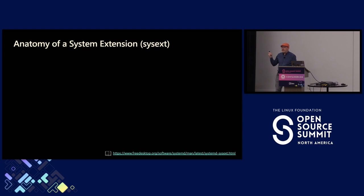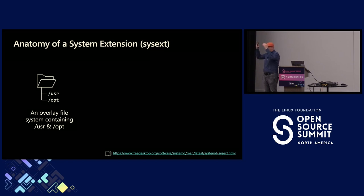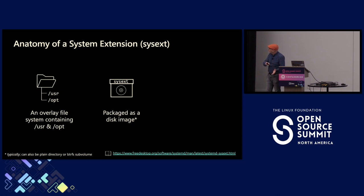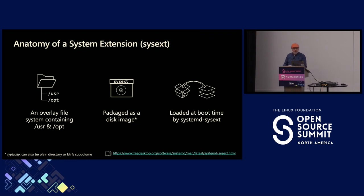So what is a system extension and what does it actually look like? In some ways you can think of it as a bit like a container, but it's got its own special way that it's built. The first thing is you're only putting files into system directories — into /usr and /opt — and you're building an overlay file system. When it goes on, it makes it immutable, so even if you're building onto an immutable system, it makes the whole thing immutable. The files are packaged as a disk image — a raw disk image typically. And there's this tool called systemd-sysext, which typically you're loading at boot time, though you can actually load it at runtime as well.